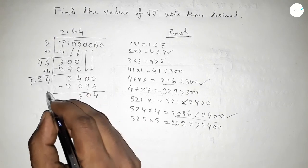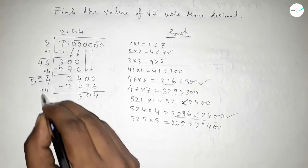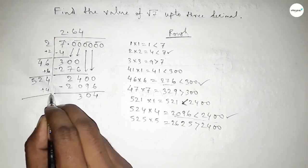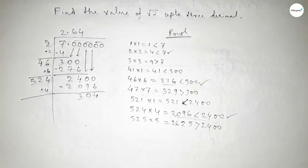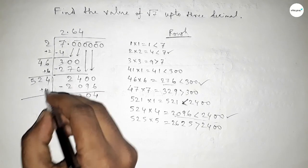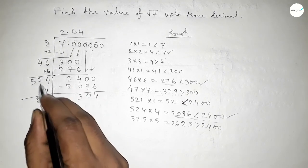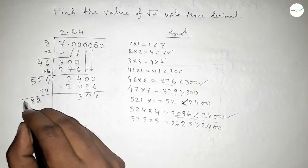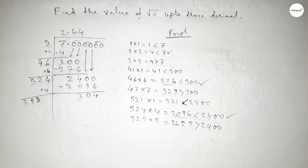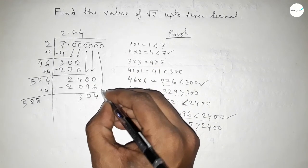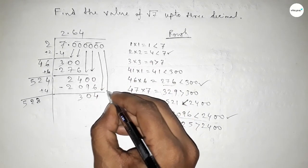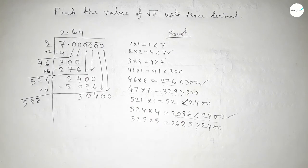Similarly, adding the last digit: the last digit is 4, so 4 plus 4 equals 8, giving us 528. Bringing down the last pair of zeros.